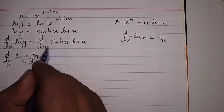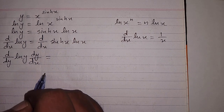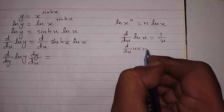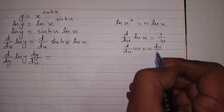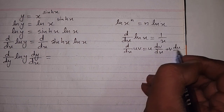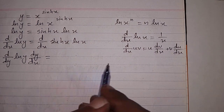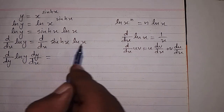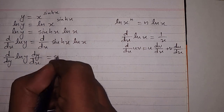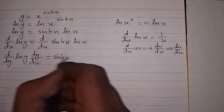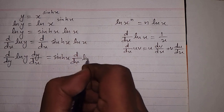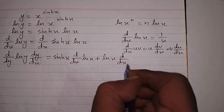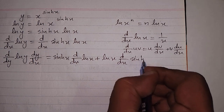On the right side, we apply the product rule of differentiation: d/dx of u·v equals u times the derivative of v plus v times the derivative of u. Here u is hyperbolic sin x and v is ln x. So we write hyperbolic sin x times the derivative of ln x, plus ln x times the derivative of hyperbolic sin x.